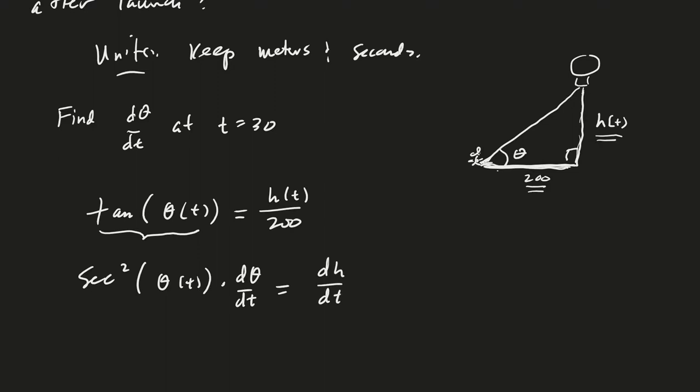Times the one over 200, just as constant, so we could... maybe I should leave some space there. One over 200 times dh/dt. All right, so do I know everything that I need in order to find dθ/dt?